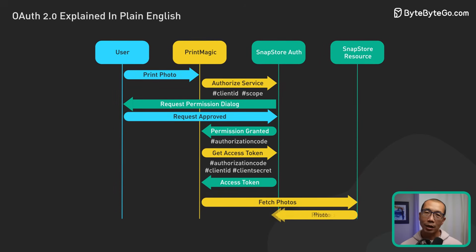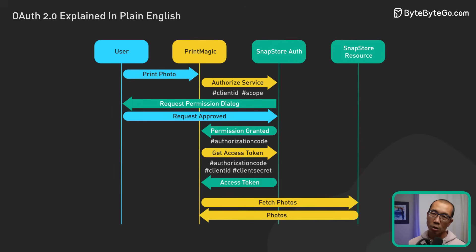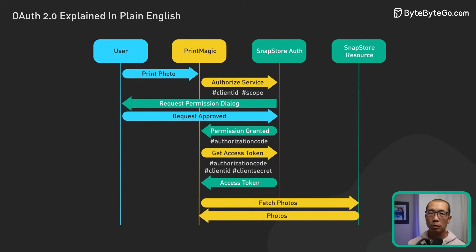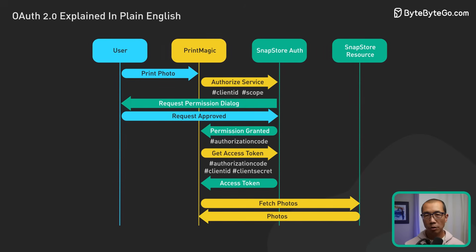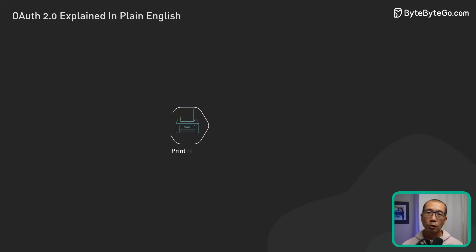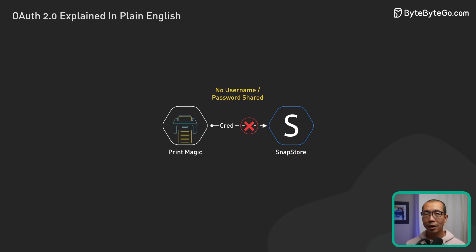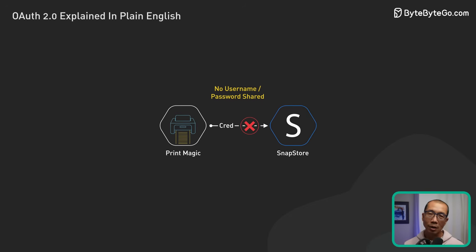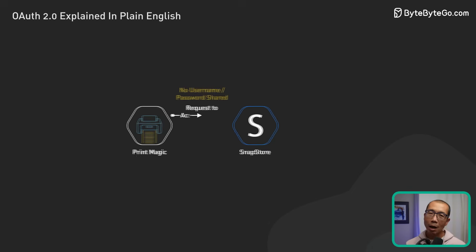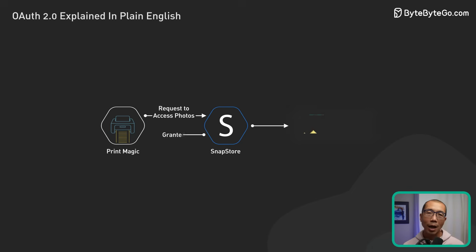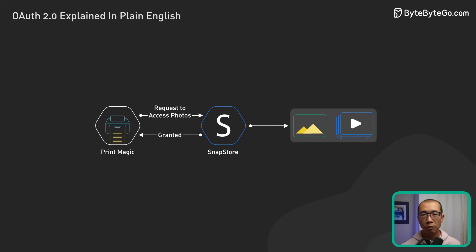Finally, PrintMagic uses this access token to request our photos from SnapStore's resource server. This OAuth 2 process ensures that our SnapStore login credentials are never exposed to PrintMagic, while allowing PrintMagic to access only the photos we authorized it to see.